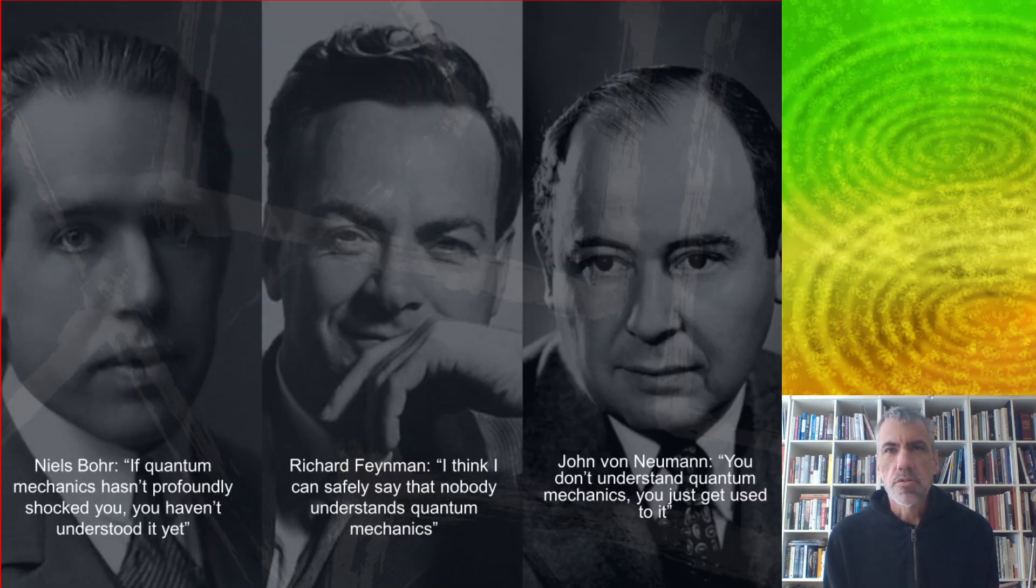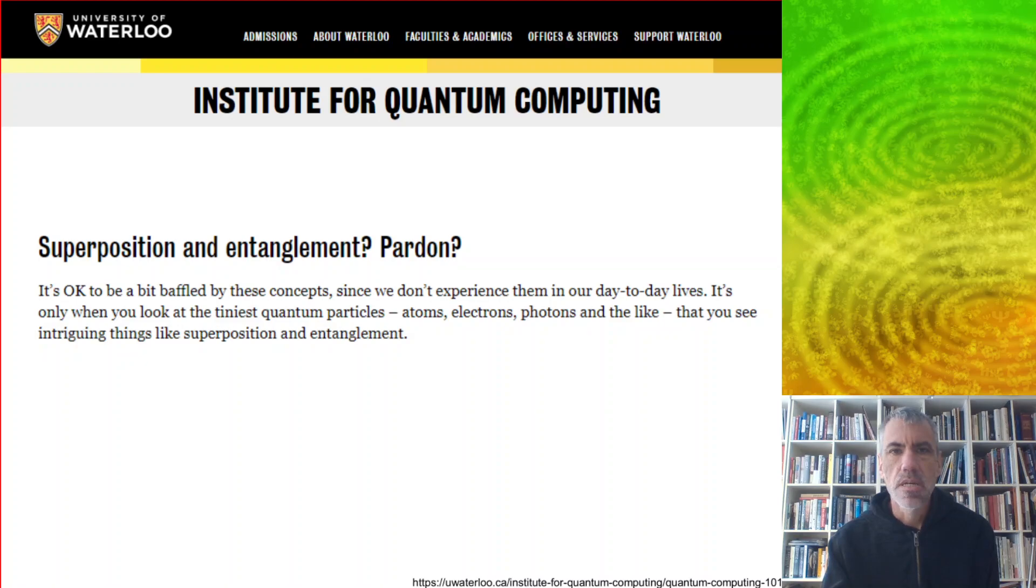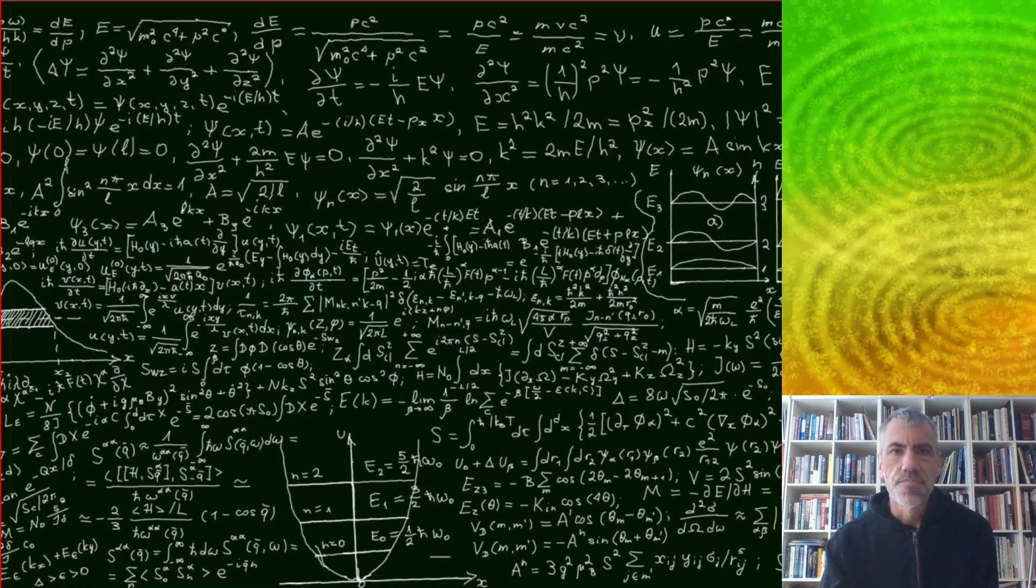Now, when we try to apply quantum ideas to areas outside of physics, we encounter a lot of obstacles. One is that we've constantly been told by famous physicists and mathematicians that quantum mechanics is fundamentally incomprehensible, so we'll never really understand it. We have these weird phenomena like Schrodinger's cat, which can be alive or dead at the same time. We're often told that these concepts such as superposition and entanglement only apply to the tiniest quantum particles, and you'll never encounter them in your everyday life. And then finally, there's this impenetrable mathematics.